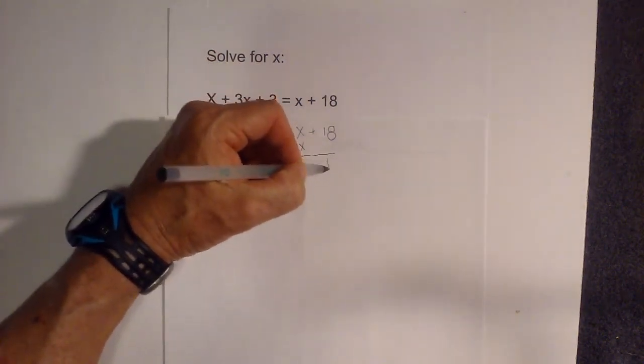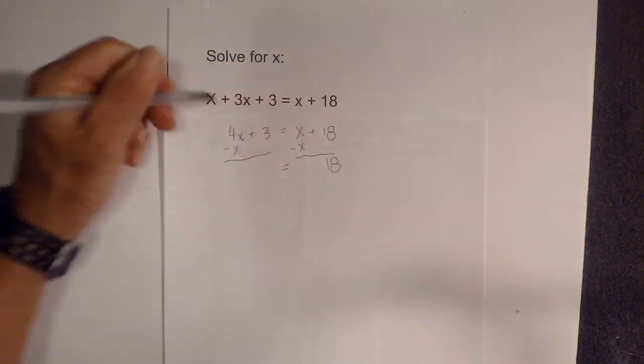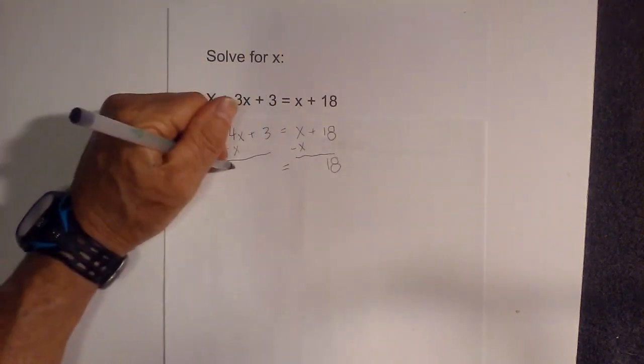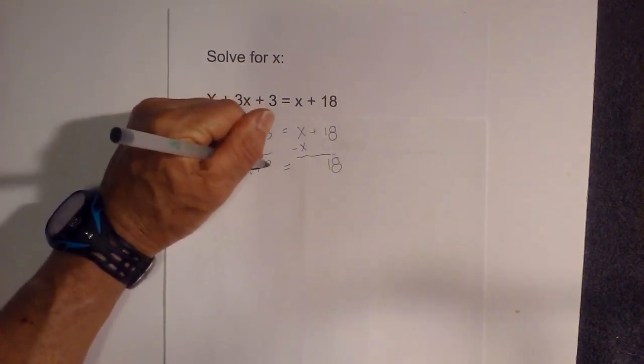These cancel. I'll bring down the 18 equals, and 4x minus x is 3x plus 3.